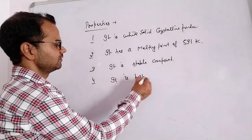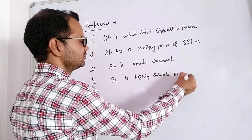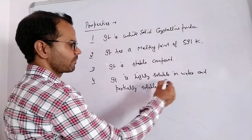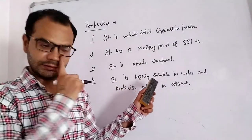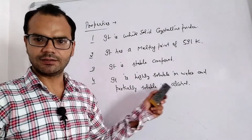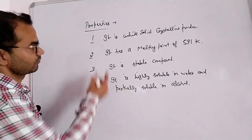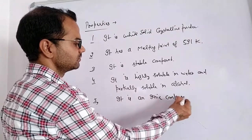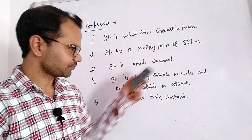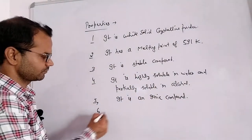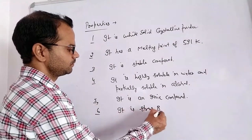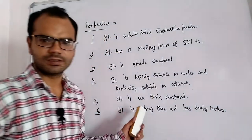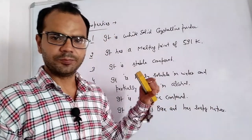Fourth, it is highly soluble in water and partially soluble in alcohol. Fifth, it is an ionic compound, so an aqueous solution of sodium hydroxide will behave as a conductor. Sixth, it is a strong base and has a soapy or slippery nature when touched.